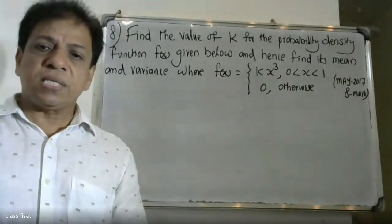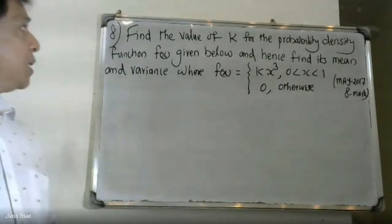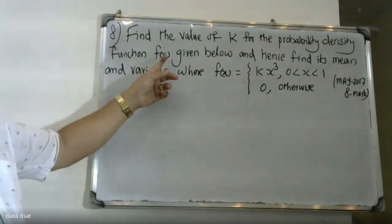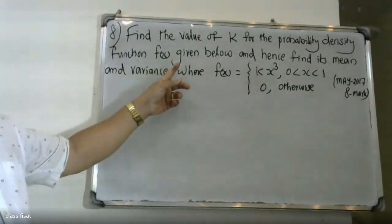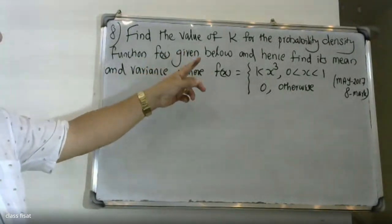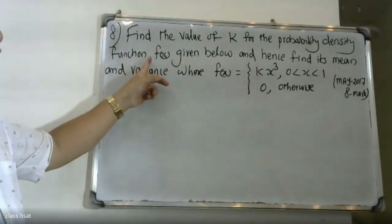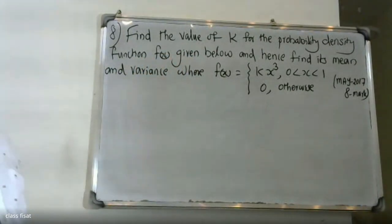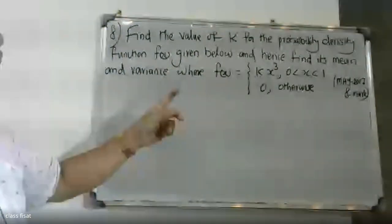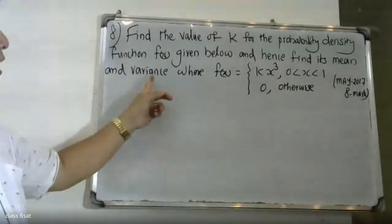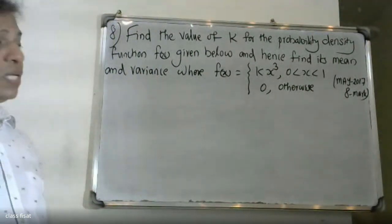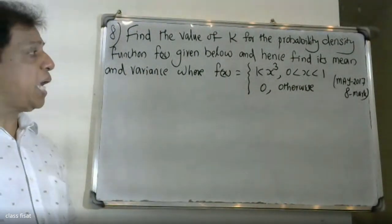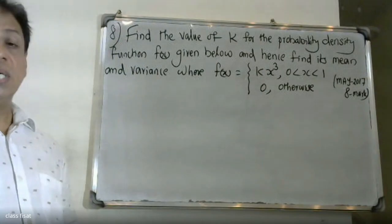Find the value of k for the probability density function f of x, and hence find its mean and variance, where f of x is equal to k x cubed for 0 less than x less than 1, and zero otherwise.